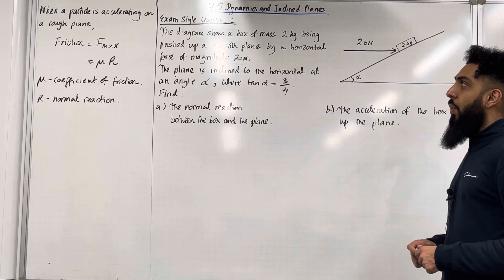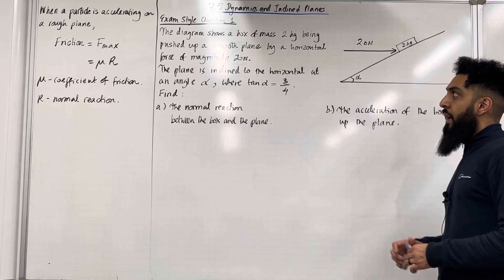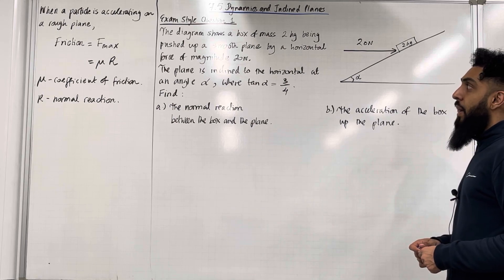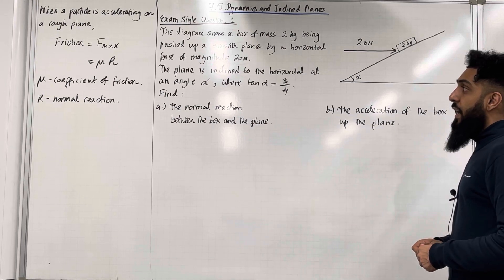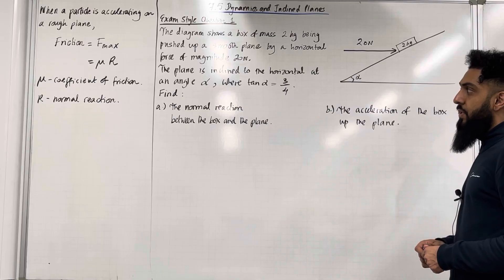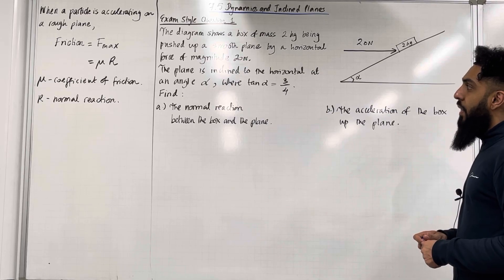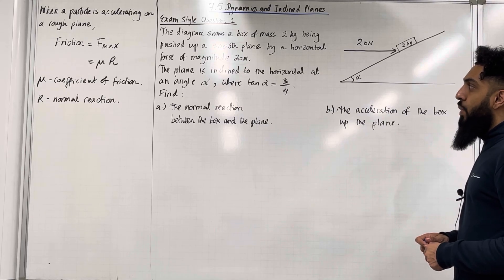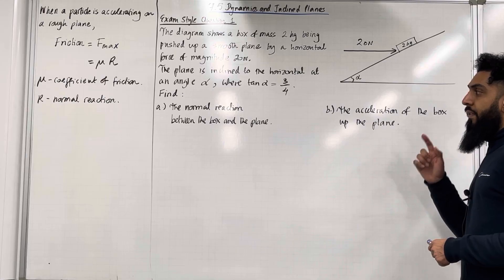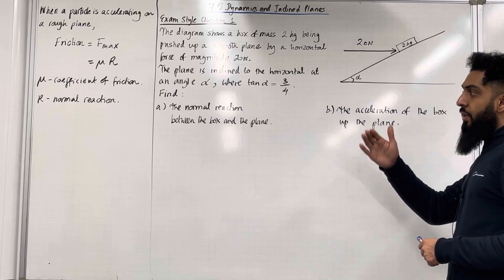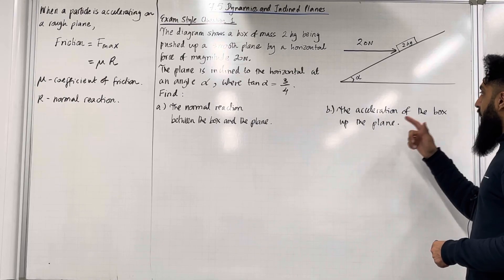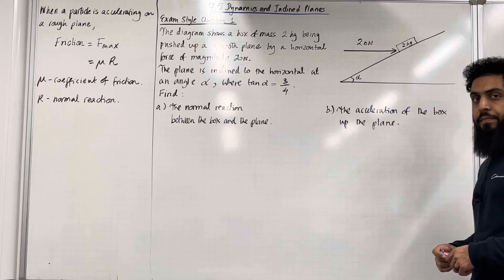Exam style question 1. The diagram shows a box of mass 2 kg being pushed up a smooth plane by a horizontal force of magnitude 20 newtons. The plane is inclined to the horizontal at an angle alpha where tan alpha is equal to 3 over 4. Find part A, the normal reaction between the box and the plane, and part B, the acceleration of the box up the plane.